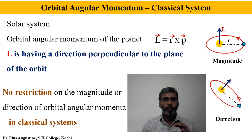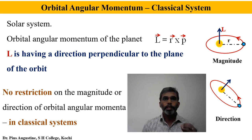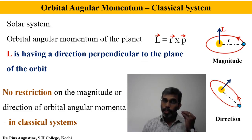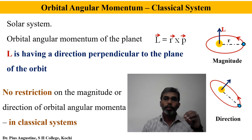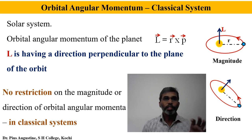Similarly, the direction of orbital angular momentum is also not restricted in classical systems — the only constraint is that it be perpendicular to the plane of the orbit, which follows from the definition of the cross product. The same is true for the spin angular momentum of a planet: the magnitude involves the moment of inertia and the angular velocity of spinning, and this too is not quantized either in magnitude or in direction. So for planets revolving around the Sun there is no restriction on the magnitude or direction of orbital or spin angular momentum.